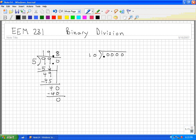So 10 will not divide into 1. So what I do is I add another digit. 10 will divide into 10, 1 time. 1 times 0 is 0. 1 times 1 is 1. Then I subtract. 0 minus 0, 1 minus 1. Then I bring down the 0.